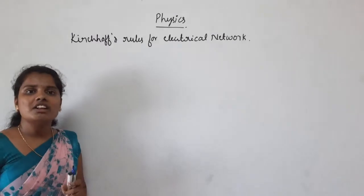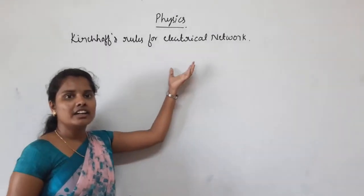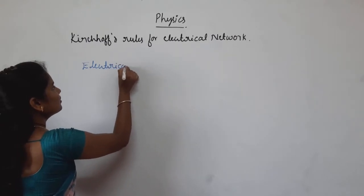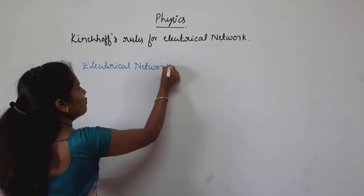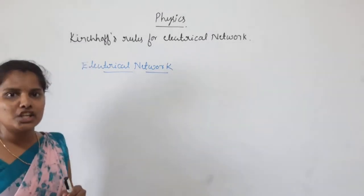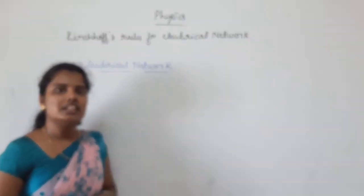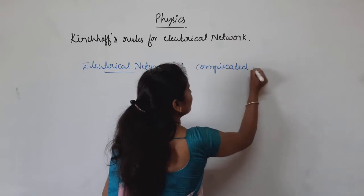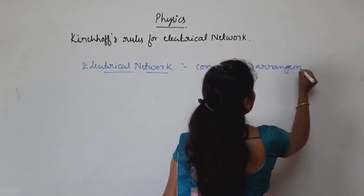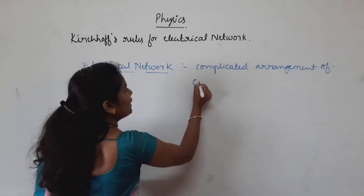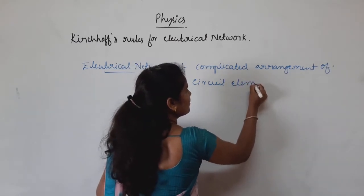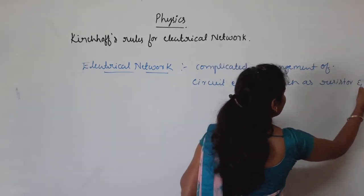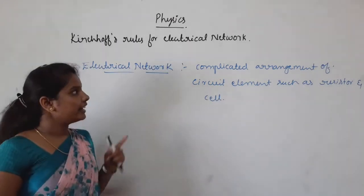So here several terminologies are used. The first one is electrical network. It is a complicated arrangement of circuit elements such as resistors or cells. This is called an electrical network.